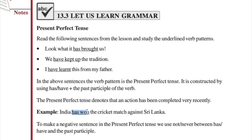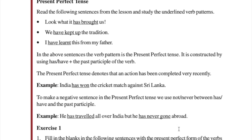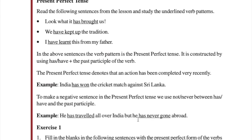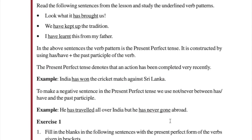For example: 'India has won the cricket match against Sri Lanka.' India is singular so we use has plus the third form of the verb. Has or have plus the third form describes actions that were completed just recently. To make these sentences negative, we add 'not' or 'never' after has or have. For example: 'He has traveled all over India but he has never gone abroad' — meaning he has never gone outside India.